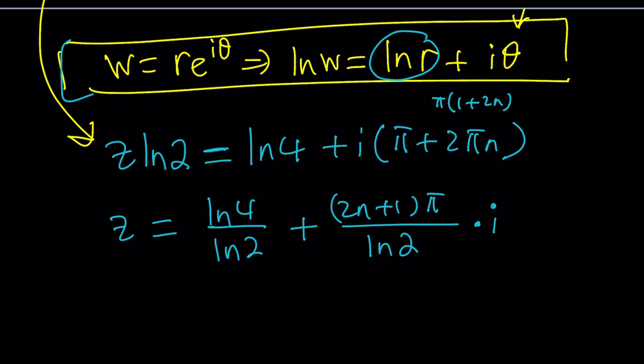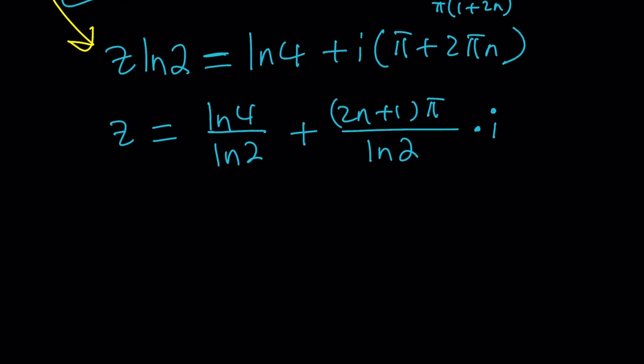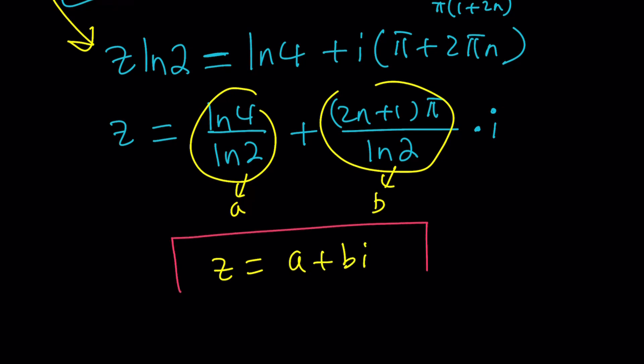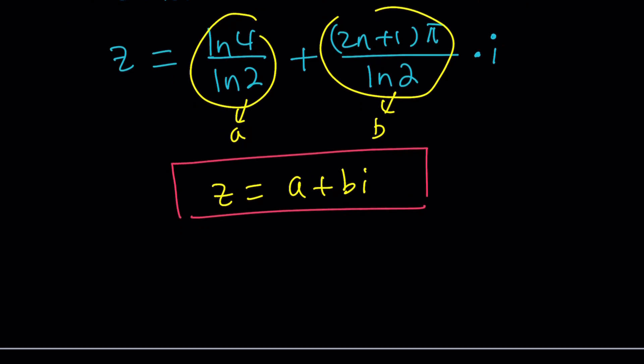You see this is the coolest thing about solving these kinds of equations because we end up with a number in standard form. So if you call this a and if you call this b guess what this becomes? z equals a plus b i and yes that is the name of this channel. All right just remember that.